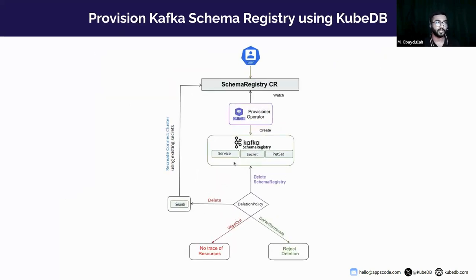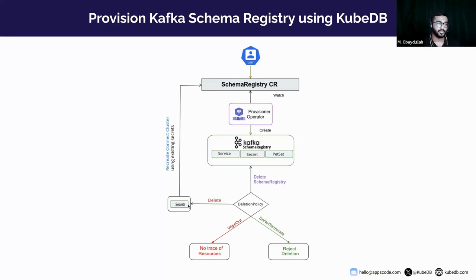Next I will explain how schema registry works in KubeDB and how we provision it in a Kubernetes cluster. Since schema registry is a custom resource definition, the user must apply a schema registry custom resource. When a user applies a schema registry custom resource, the provisioner operator will watch the custom resource and create necessary resources like services, secrets, and a PetSet — which is equivalent to a StatefulSet. Now if you want to remove the custom resource from Kubernetes, there are three deletion policies. If you set deletion policy to 'delete', the operator will delete everything except necessary security secrets like authentication or TLS secrets.